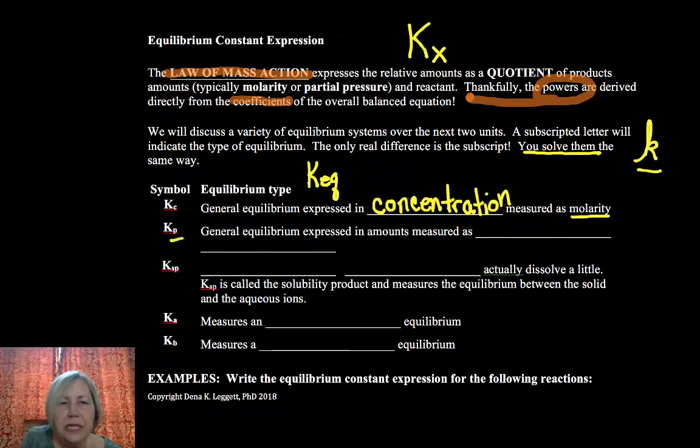K with a subscript P, a capital P there, we are going to be describing the relative amounts of reactants and products in terms of partial pressures.